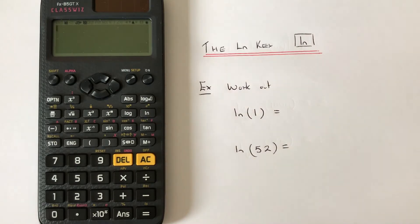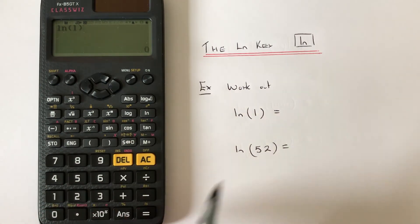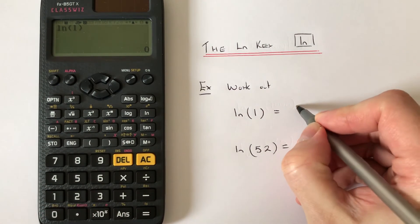So let's have a look at working out the natural log of 1. So if we press ln then 1, close your bracket and press equals, and we get the answer 0.